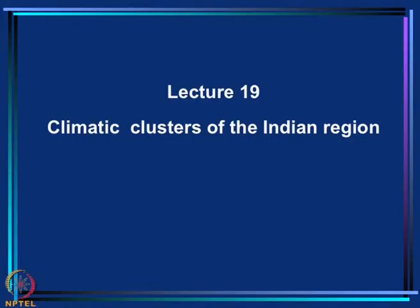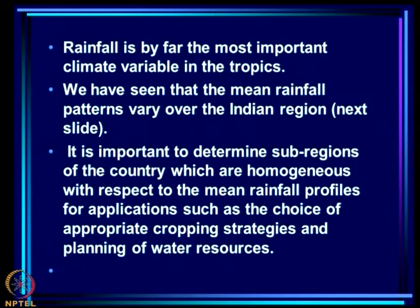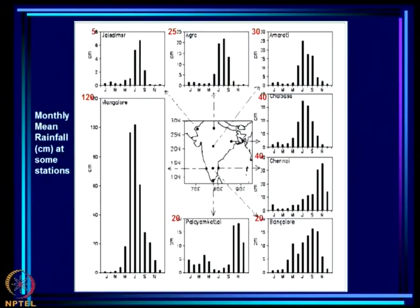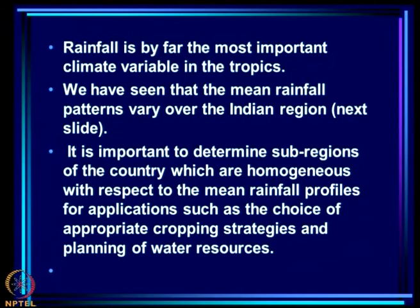Today I will talk about the climatic clusters of the Indian region. Although I said climate, we will talk primarily about rainfall because rainfall is by far the most important climate variable in the tropics. We have seen that the mean rainfall patterns vary over the Indian region — there is considerable variation, such as the typical west coast pattern over Mangalore versus Chennai, and the monsoon zone with characteristic high rainfall during June-July.